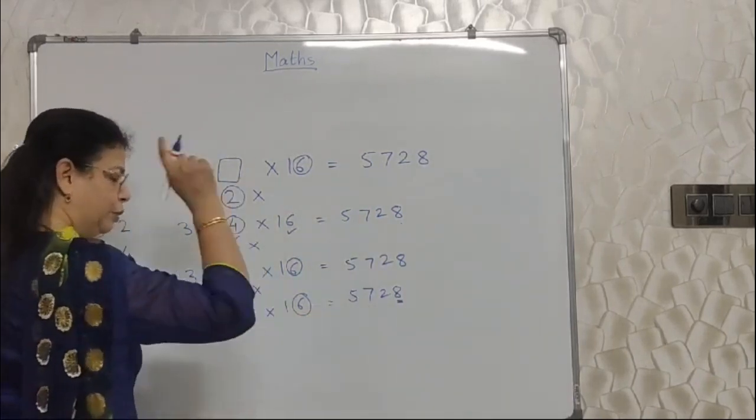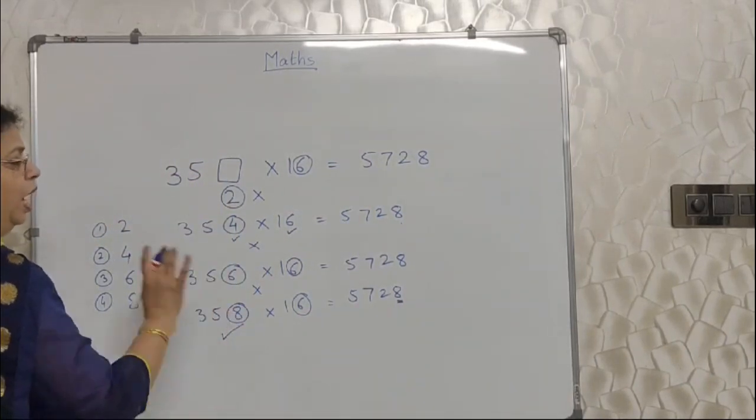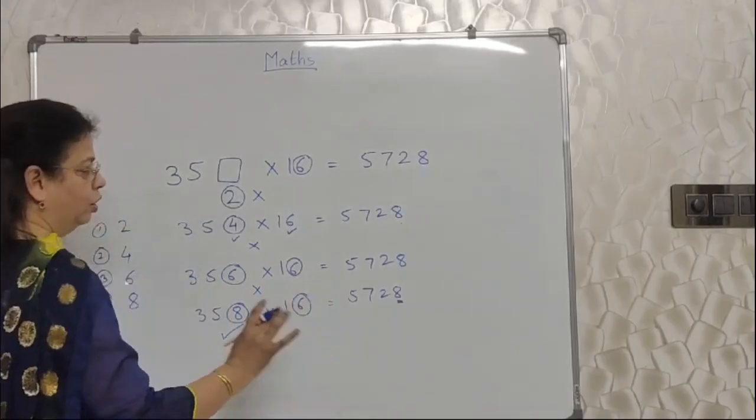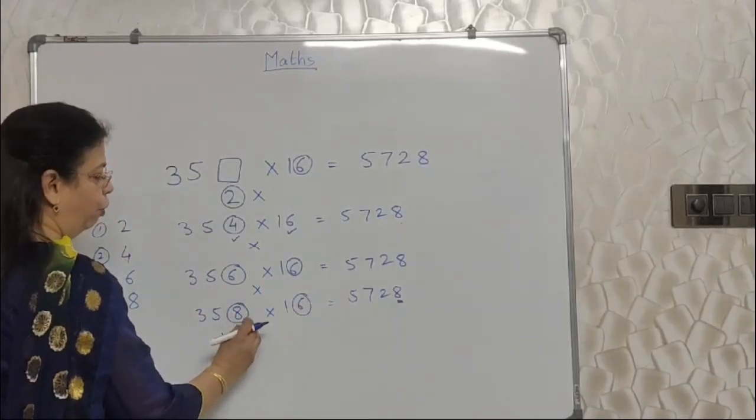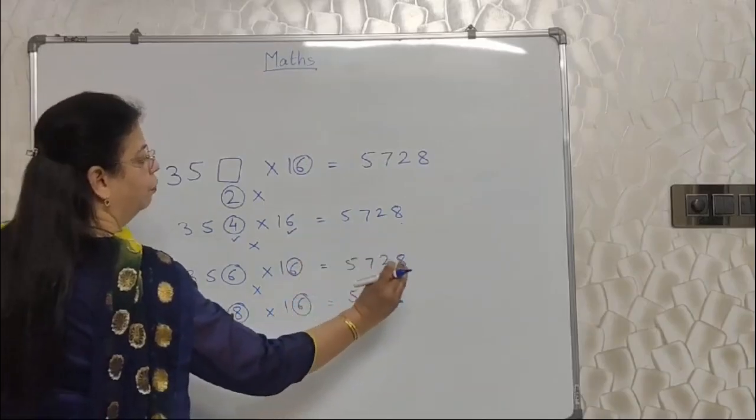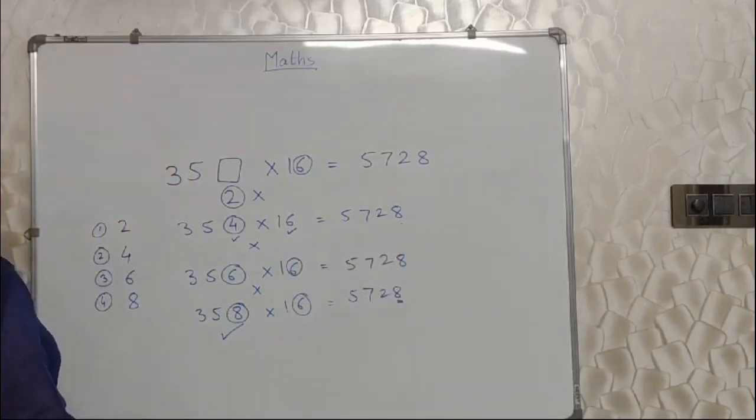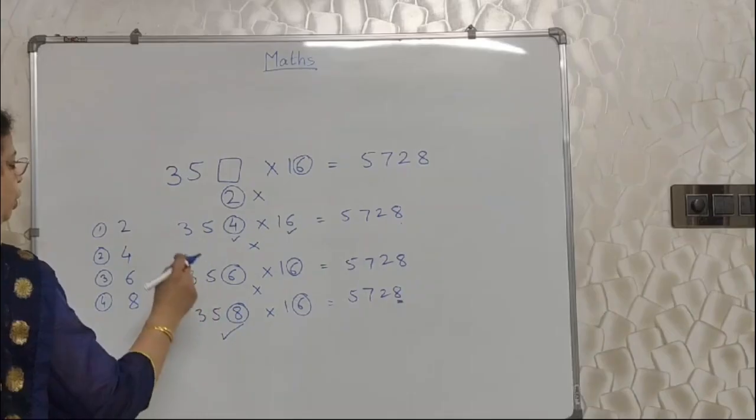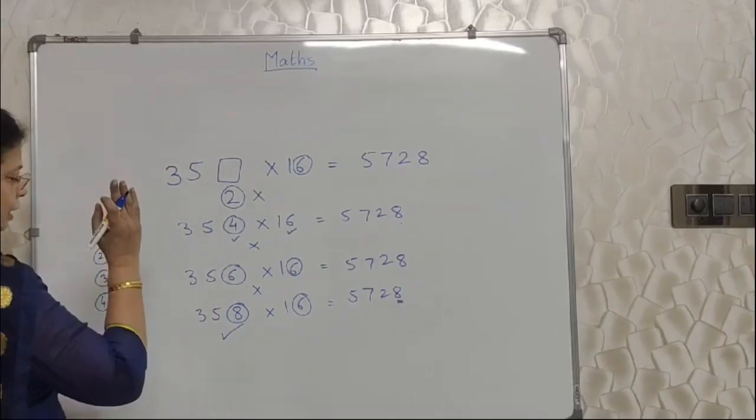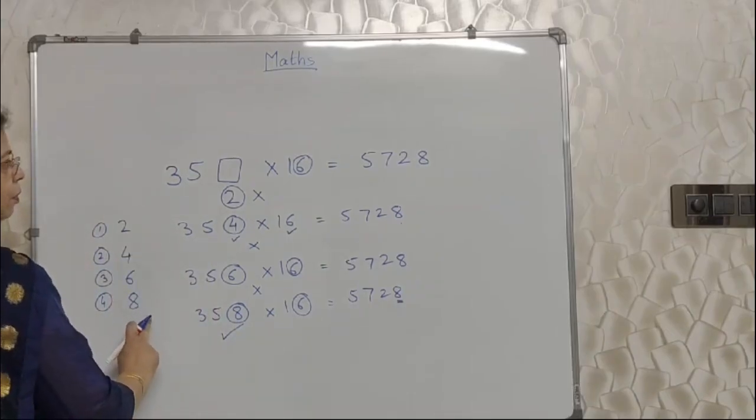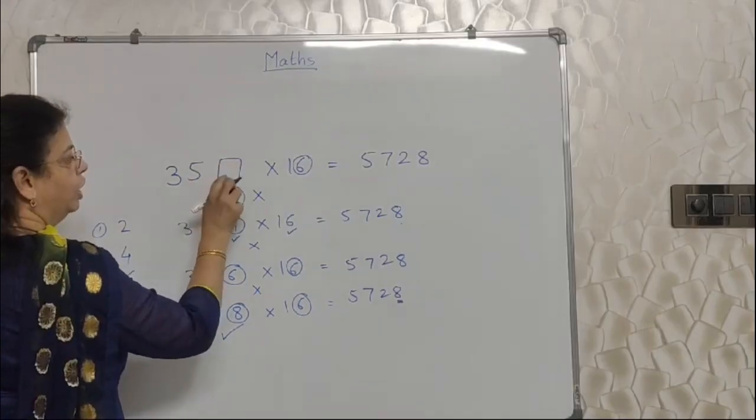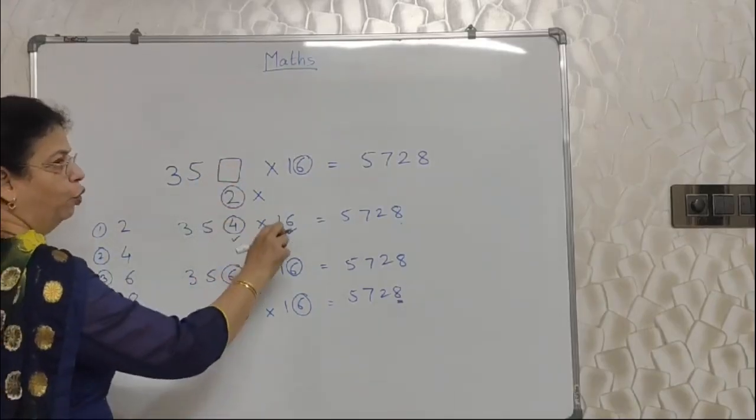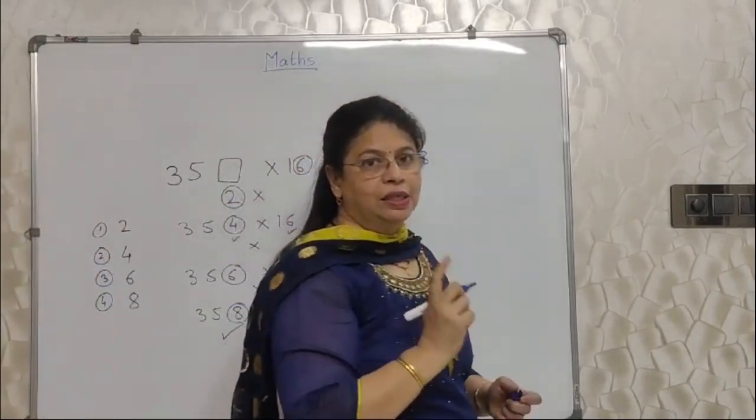I have not tried and done the multiplication to see whether it is 5728. It is bound to be 5728. I have not done big calculations, big multiplications. I have just taken the help of units place and found out whether the answer is going to be 8 or anything else. In this case, it is 8. So we have to find out the units place. So I have taken the help of units place only.